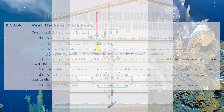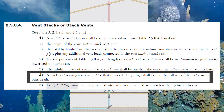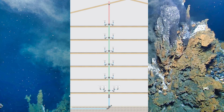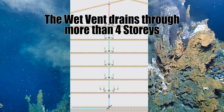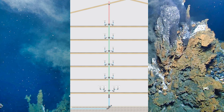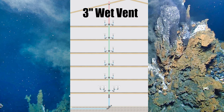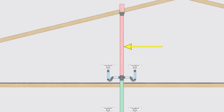The last code clause we need to cover is 2584 number four: a stack vent serving a wet vent stack that is over four stories high shall extend the full size of the wet vent to outside air. Let's use this picture to illustrate. First, let's count how many stories the wet vent passes through: one, two, three, four, five — we are passing through more than four stories, therefore we need to apply this rule. We have 10 lav sinks draining into this multi-story wet vent and two two-compartment kitchen sinks down at the base. If you size this properly you'll find we have a three-inch wet vent, meaning the stack vent extending from the top is also going to be three inches until it penetrates the roof.